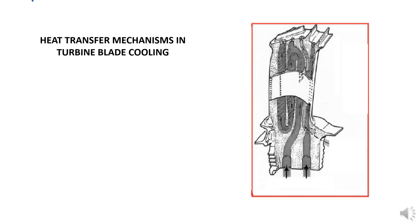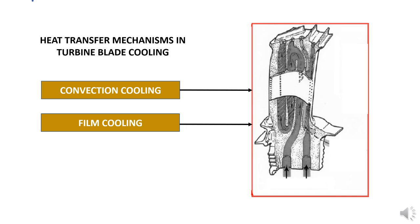The heat transfer mechanisms which are used for turbine blade cooling are convection cooling, film cooling, and impingement cooling. These three techniques are used together in current engines.